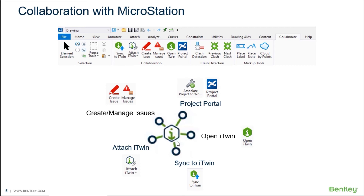To share files associated with a project — such as reference files, point cloud files, 3MX files, raster files, etc. — with a team member, you only need to push your changes from the design file to the iModel and then share a link to the iModel with them. The team member you share the link with will be able to view, disseminate, and analyze the data stored in the iModel from any location.